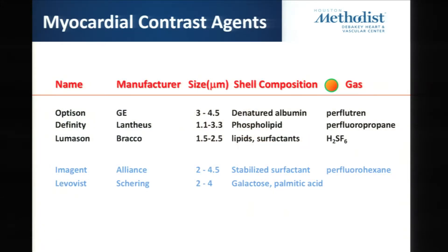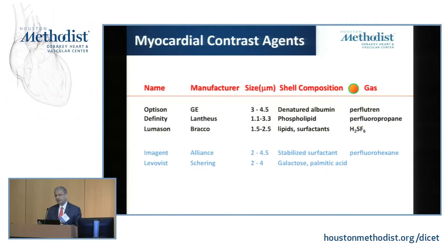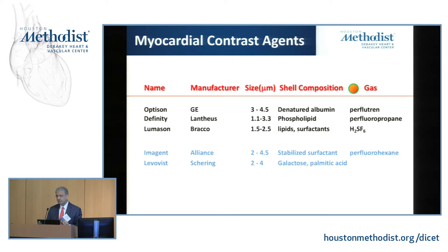But that's not what we're going to talk about today. What we're going to talk about is the myocardial contrast agents that are even smaller — they are in the tiny micrometer size. These tiny ones have a shell composition and they have a little inert gas. We have three types of microbubbles in the United States that can be used for your diagnostic accuracy on the left side of the heart. The indication nowadays is: if I cannot see more than two segments, it is very appropriate to use contrast agents to enhance our detection of endocardial motion and therefore evaluation of regional and global function.